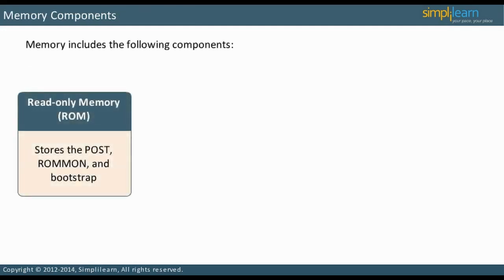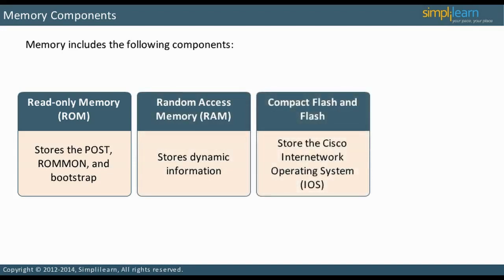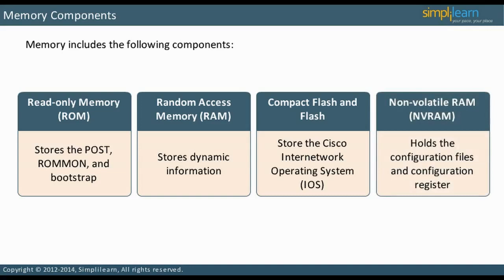Read-only memory, ROM, stores the power-on self-test, POST, ROM monitor, ROM on, and bootstrap. Random access memory, RAM, stores dynamic information such as the routing table, running configuration, ARP cache, and buffers. Compact flash and flash stores the Cisco inter-network operating system, IOS. Non-volatile RAM, NVRAM, holds the configuration file and the configuration register.